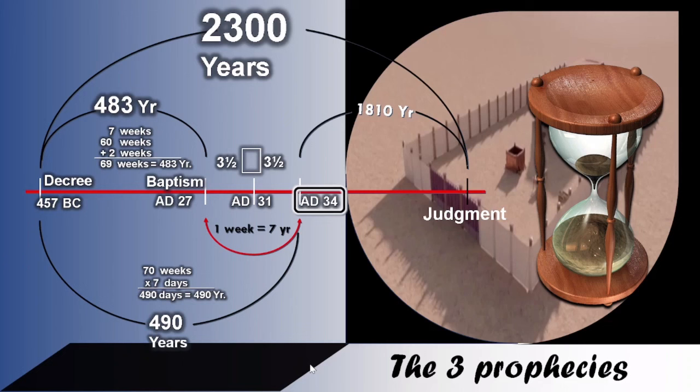Now, there is a gap of one week. That is from AD 27 to AD 34. AD 34, we see the stoning of Stephen, who was a disciple and also a servant of Jesus Christ.